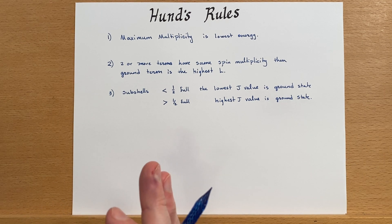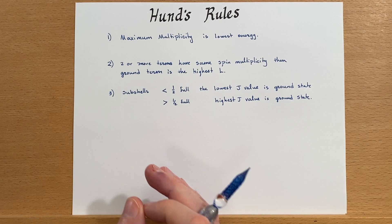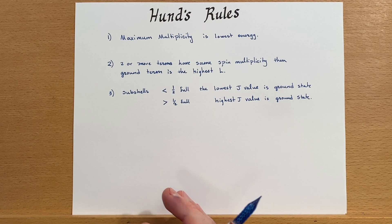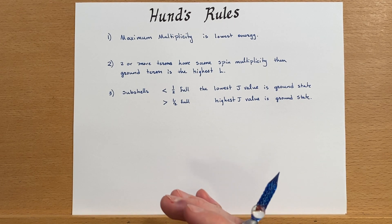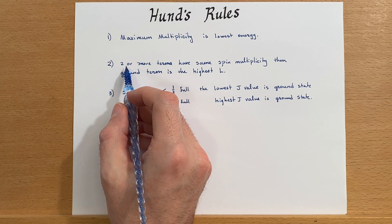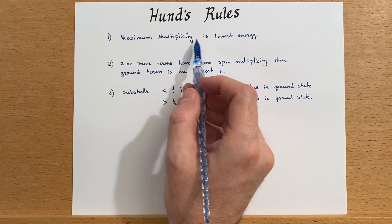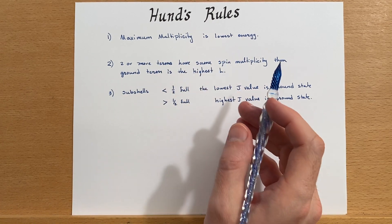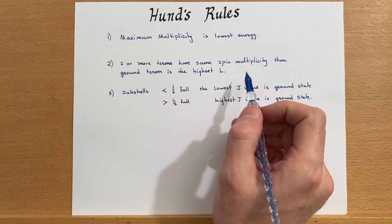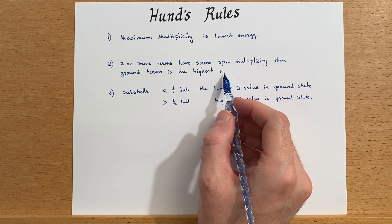The first Hund's rule is that the maximum spin multiplicity is the lowest energy term. The second rule is if two or more terms have the same spin multiplicity — so rule number one does not completely decide it by itself — then you go with the highest L quantum number.